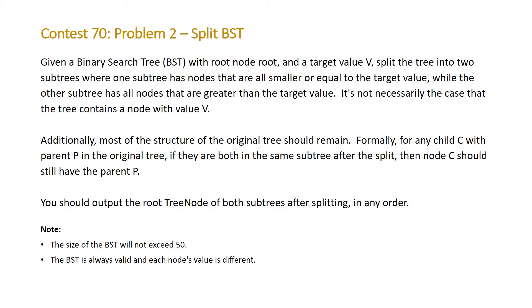The problem states given a binary search tree with root node root and a target value V, split the tree into two subtrees where one subtree has nodes that are smaller or equal to the target value while the other subtree has all nodes that are greater than the target value. It's not necessarily the case that the tree contains a node with the value V.